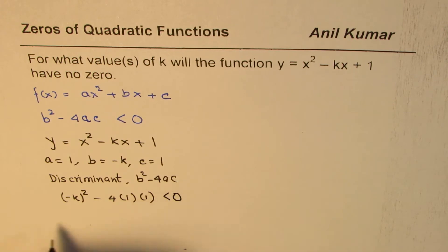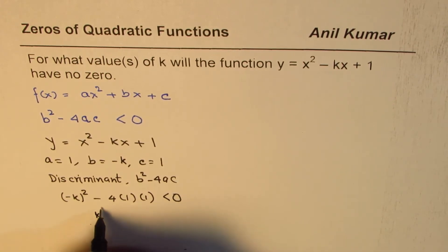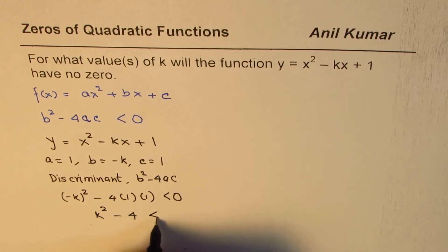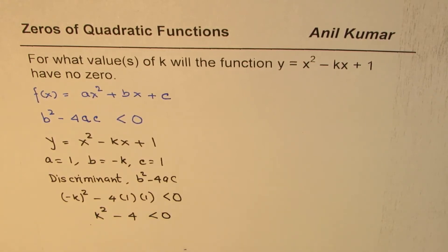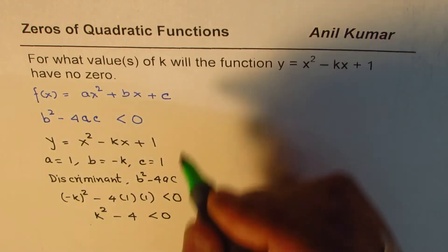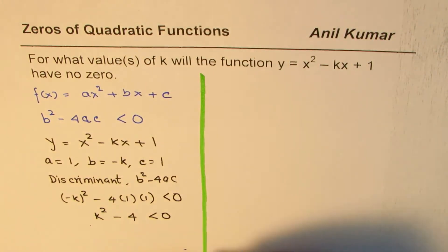So this is the equation which we need to solve, which is effectively k² - 4 < 0. You need to solve this equation to find the solution where the graph of this function will have no zeros at all.